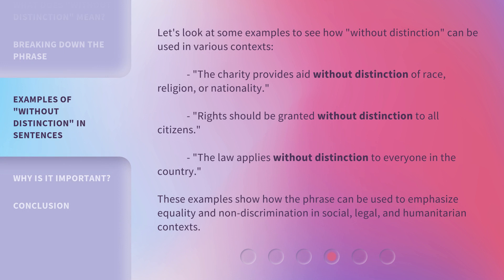Let's look at some examples to see how 'Without Distinction' can be used in various contexts. The charity provides aid without distinction of race, religion, or nationality. Rights should be granted without distinction to all citizens. The law applies without distinction to everyone in the country. These examples show how the phrase can be used to emphasize equality and non-discrimination in social, legal, and humanitarian contexts.